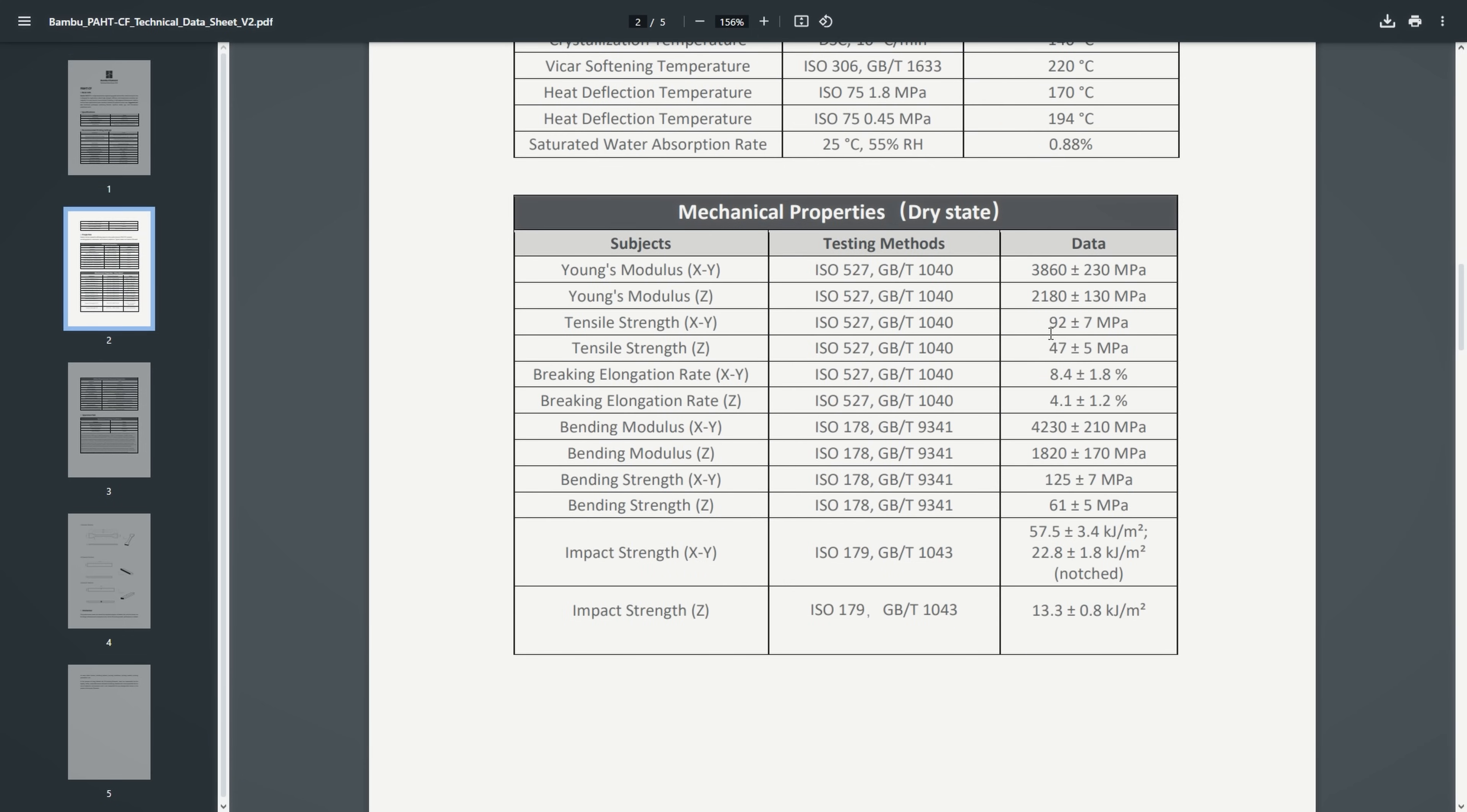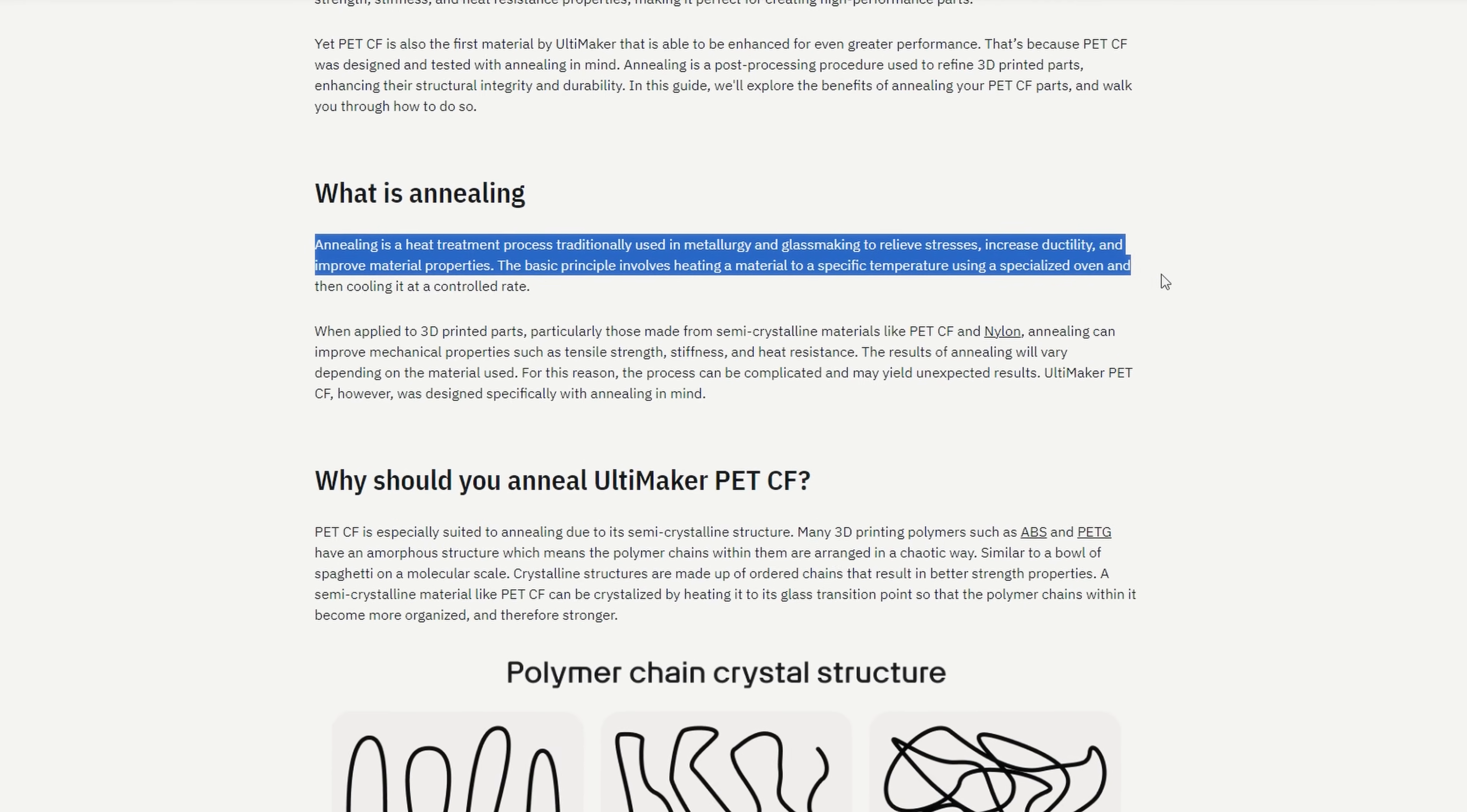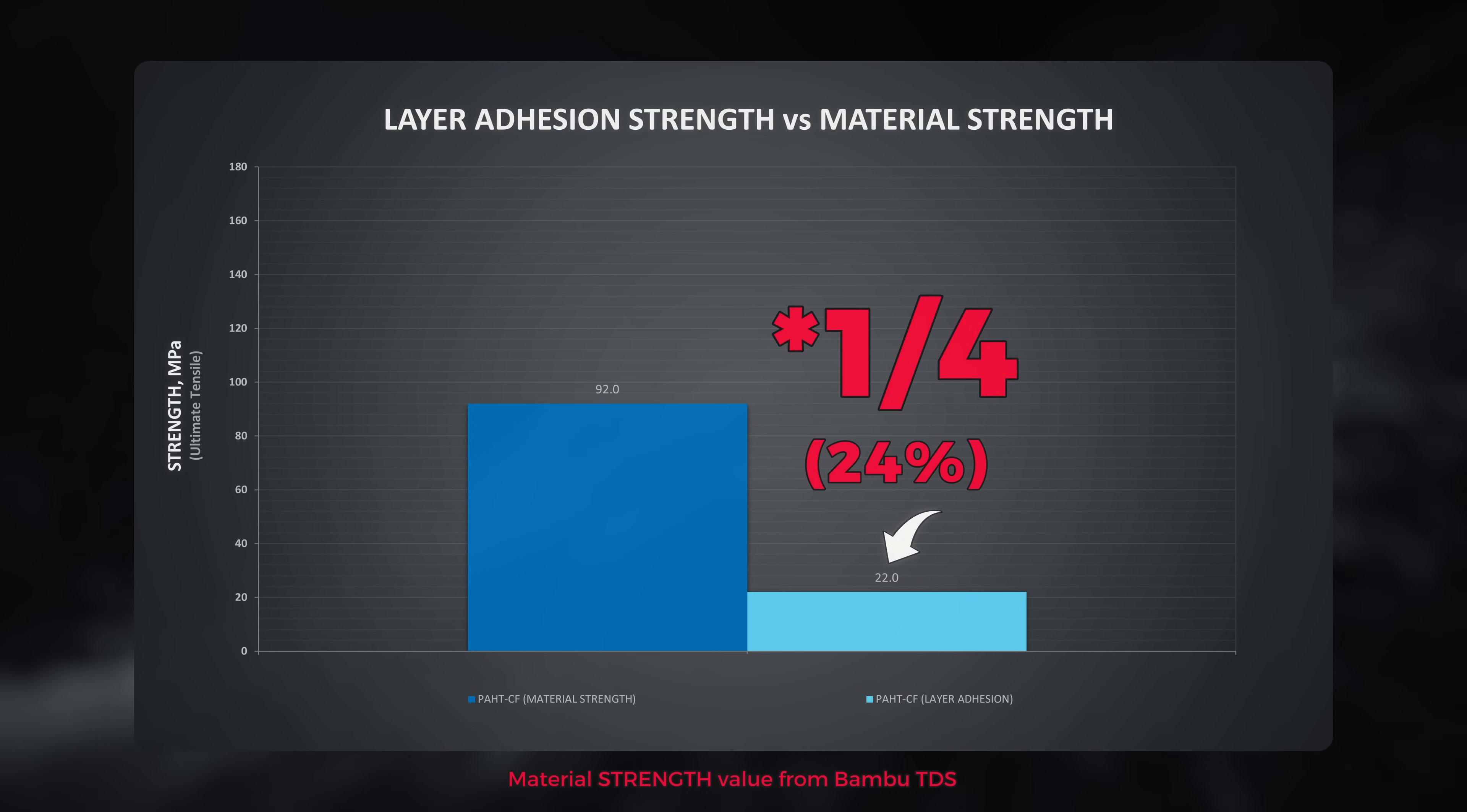As Bambu Lab provides technical data sheets for their filaments, we can also roughly calculate how much strength our prints maintain along the layer lines. Keep in mind that their numbers are with annealed test specimens, which is a heat treating process to get stronger parts. So it is not an apples to apples comparison, but rather just a rough one. We ended up with only one third of the strength along the layers compared to its material strength.